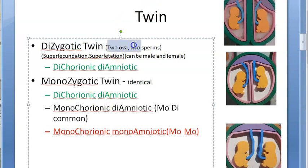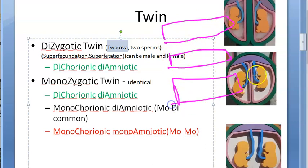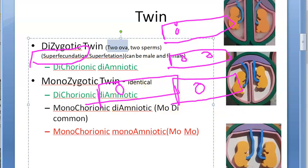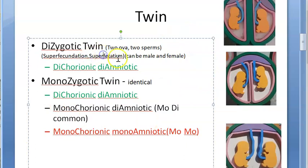Dizygotic twins require two ova, so they are called bin ovular twins. Two ova are released in the same cycle, and one sperm fertilizes each. It's also possible with two different intercourses — this is called superfecundation. If the two ova come from two different menstrual cycles and are separately fertilized, that is superfetation. Both superfecundation and superfetation result in dizygotic twins, though superfetation is more common in animals.